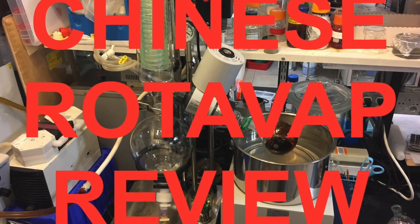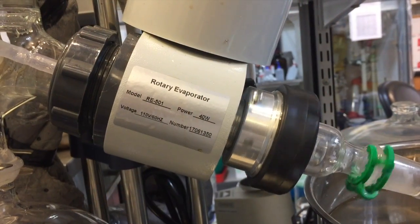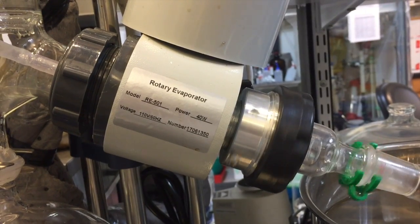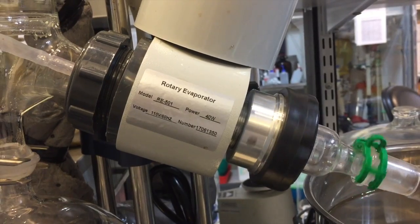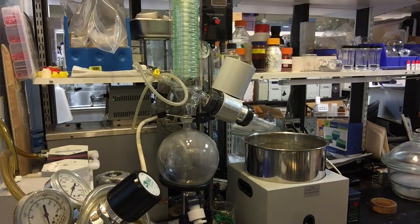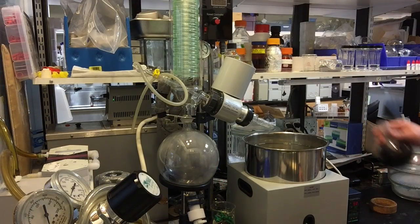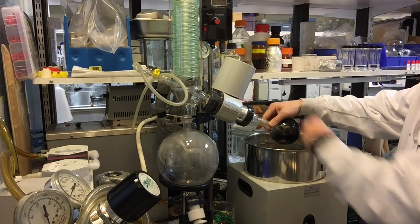A lot of people want to know about these Chinese rotovaps that flooded the online market. This is the 5 liter RE501 that you can find on Amazon or eBay. That's really common. If you'd like to check it out, click my link below.